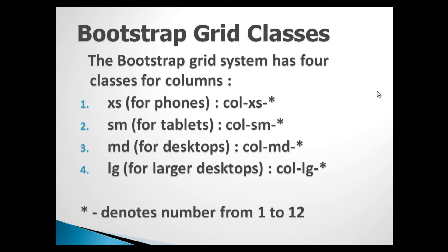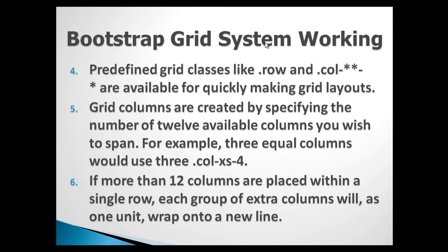These are the classes which we discussed in previous slides. Grid columns are created by specifying the number of 12 available columns you wish to span. For example, 3 equal columns would use 3 instances of col-xs-4. If more than 12 columns are placed within a single row, each group of extra columns will, as one unit, wrap onto a new line. This will be demonstrated in upcoming tutorials.